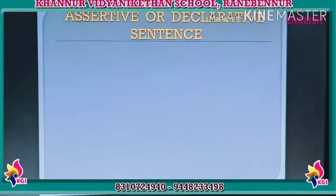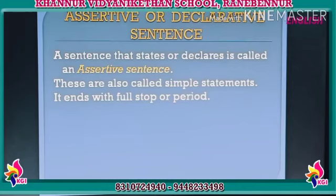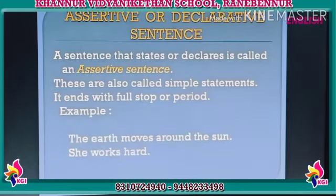Assertive or declarative sentence. A sentence that states or declares is called an assertive sentence. These are also called simple statements and they end with a full stop or period. Here are examples. First: The earth moves around the sun — it is a simple statement ending with a full stop.